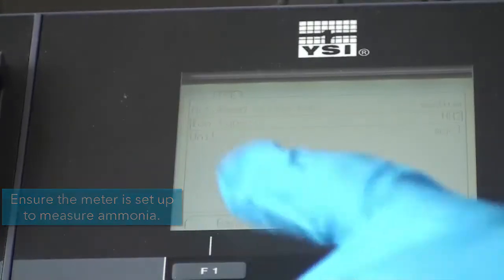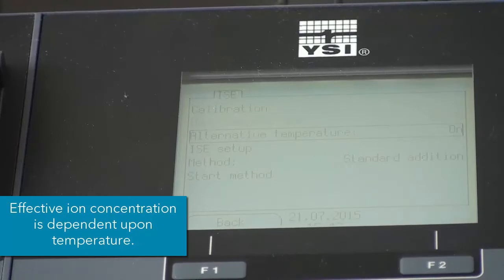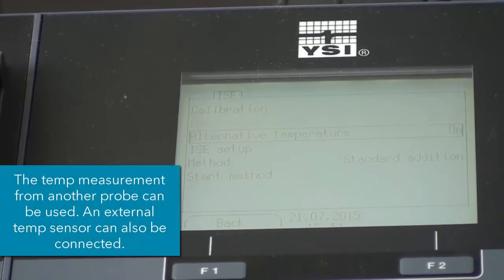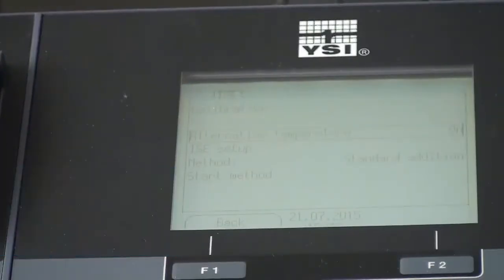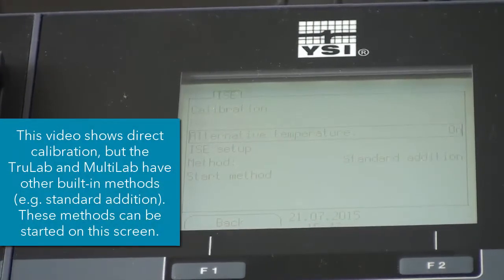So once that's set up, another thing that you can do is since the ammonia ISE does not have a temperature sensor built into it, you can actually use the temperature reading from another electrode that is connected to the meter, and use that and apply it to the ISE channel just to make sure that your measurement is compensated for temperature.